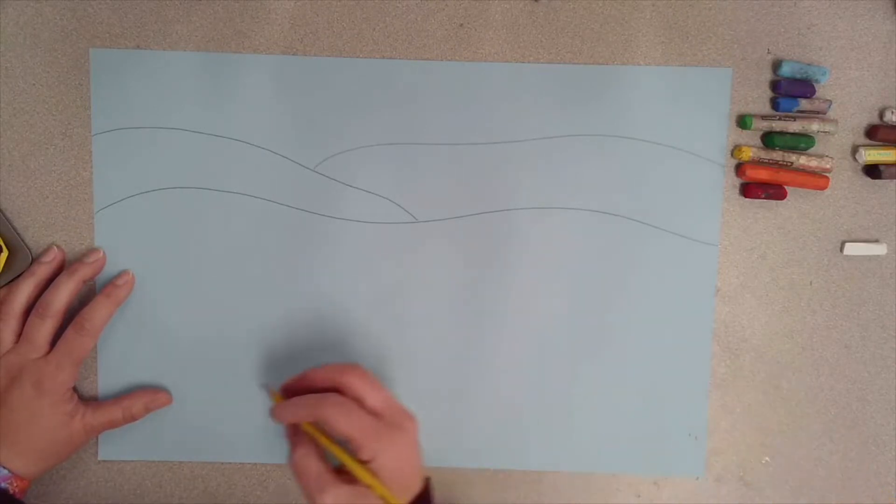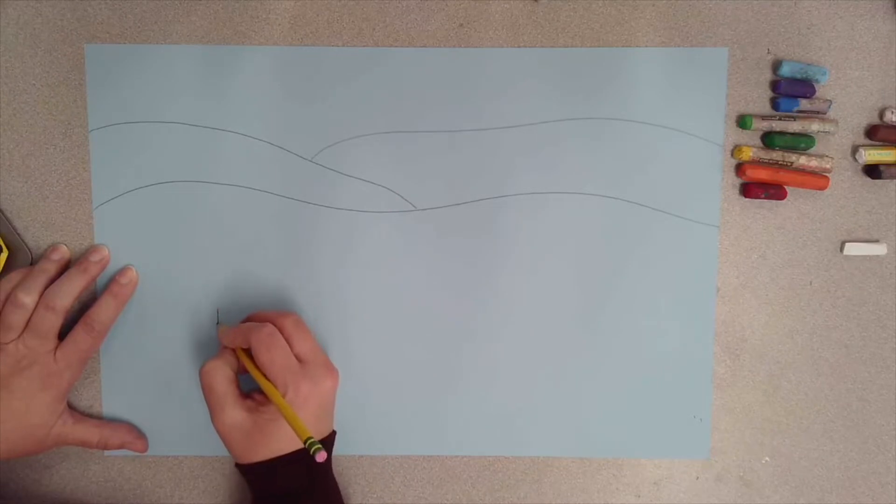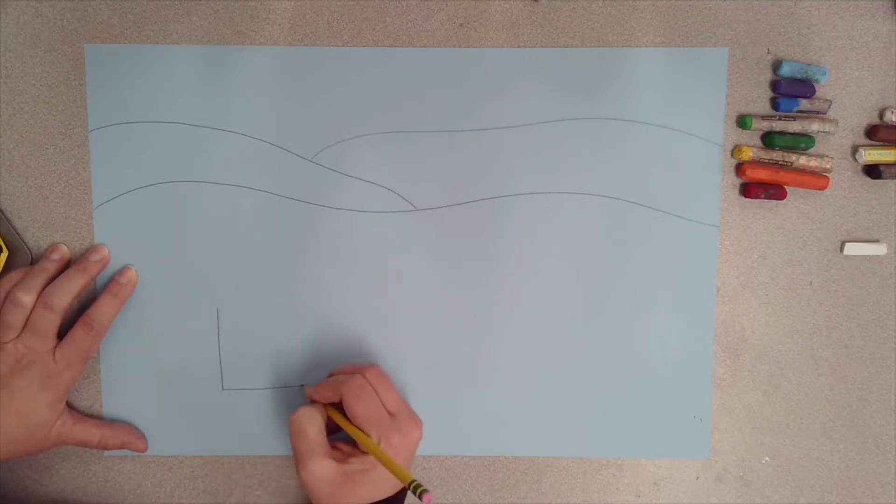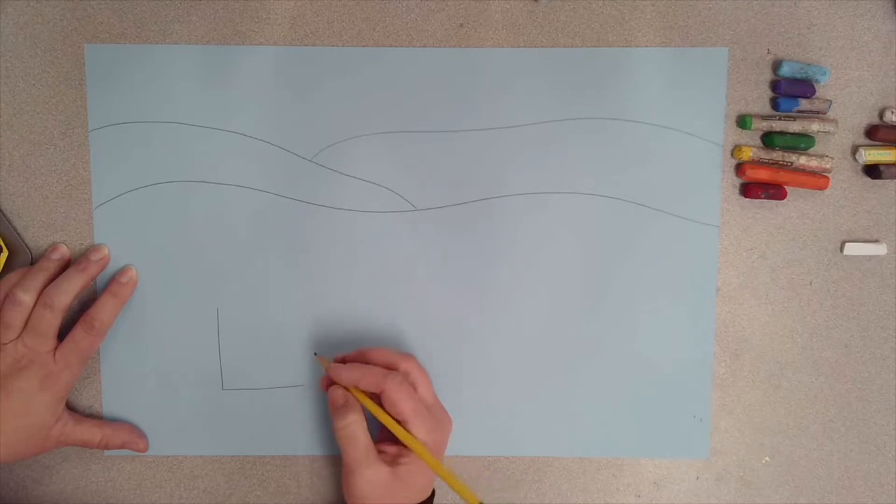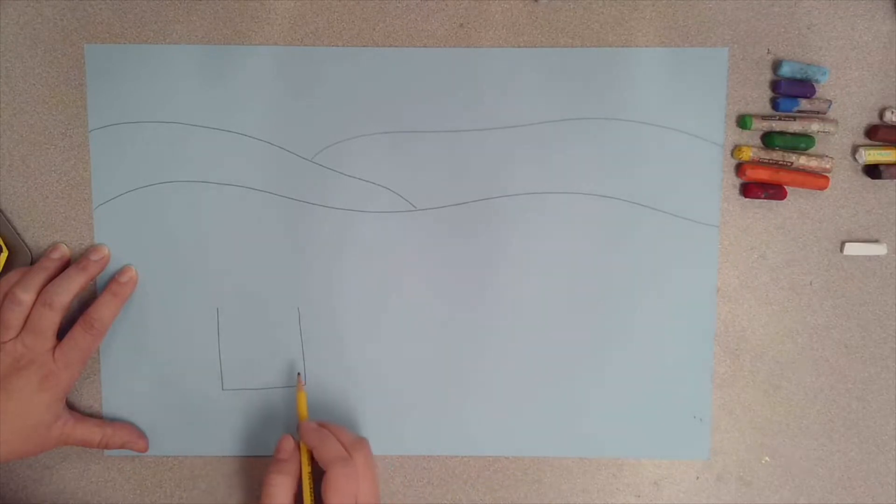Once you have two or three hills drawn in the background, I want you to start drawing some details on the hills. Remember, things in the foreground or the front of your picture are going to be larger than things in the middle ground, which is the middle of your picture, and then in the background they're going to be super small.